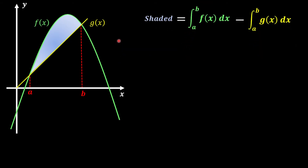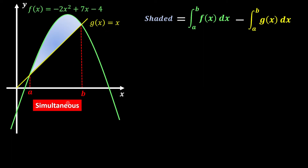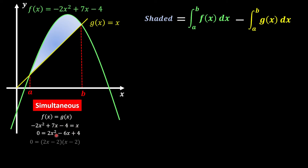Now let's do one of the questions. We have a curve of negative 2x squared plus 7x minus 4, and a straight line of just x. Again, find the intersecting points by doing simultaneous — both functions have the same x and y values at the intersecting points. Substitute the equations, move everything to the right-hand side, solve the quadratic, and we find 2x minus 2 equals 0 or x minus 2 equals 0. So 1 and 2 are our intersecting points.